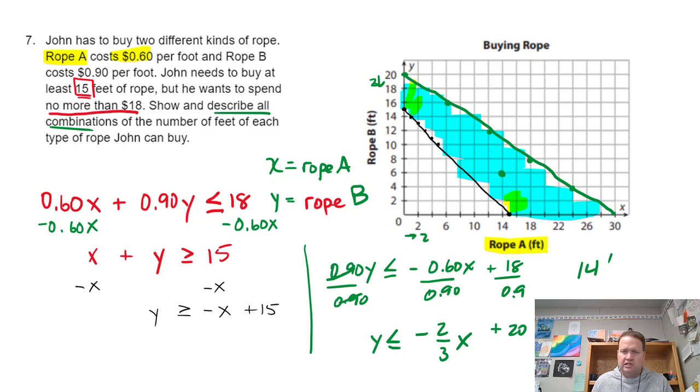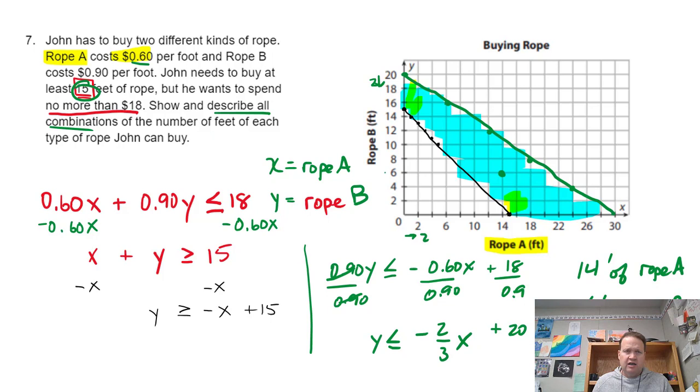One possible combination would be this. So let's get 14 feet of rope A. And that right there would be 6 feet of rope B. That meets the criteria. I have 20 feet of rope, which was at least 15. So I'm okay there. And 14 feet of rope A, 14 times 0.60 and 6 times 0.90. Well, 6 times 0.90 is $5.40. 14 times 0.60, 0.60 times 14 is $8.40. So $8.40 plus $5.40 is certainly under $18. So there we are. We're good to go.